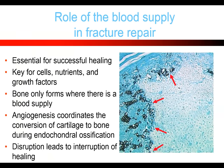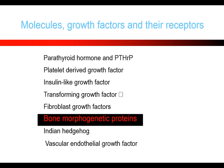Blood supply is essential for successful healing — it's key for cells, nutrients, and growth factors. Bone only forms where there's a blood supply, so if you don't have a blood supply you're not going to form bone. Angiogenesis coordinates the conversion of cartilage to bone during endochondral ossification, and disruption leads to interruption of healing. There are also a whole host of molecules, growth factors, and their receptors — particularly bone morphogenetic proteins, which are commercially available products you can use to potentially assist fracture healing.